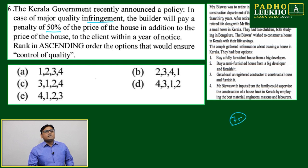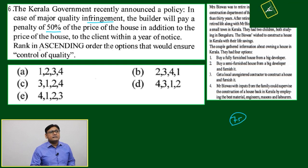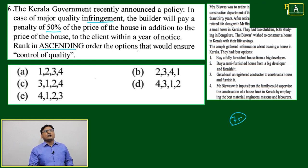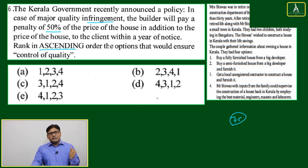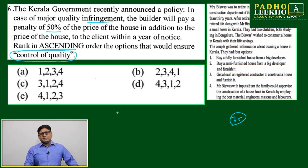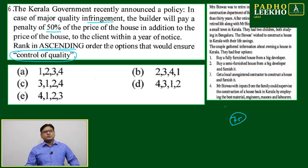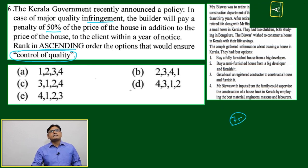50% of the price of the house in addition to the price of the house, to the client within a year of notice. Rank in ascending order the options that would ensure control of quality. What is your frame of reference? Quality. Throughout this passage the last three questions — question number 4, 5, and now 6 — are related to quality and control of quality.